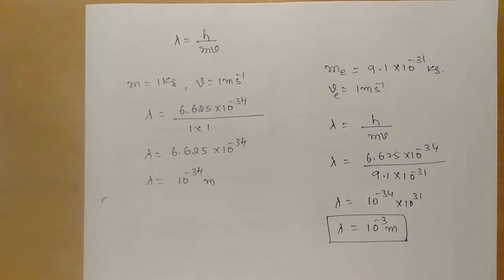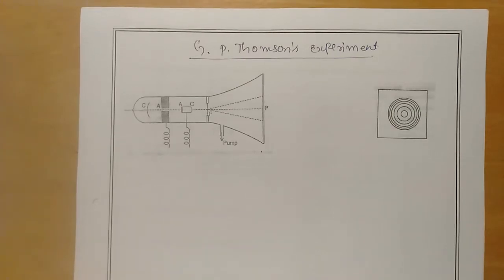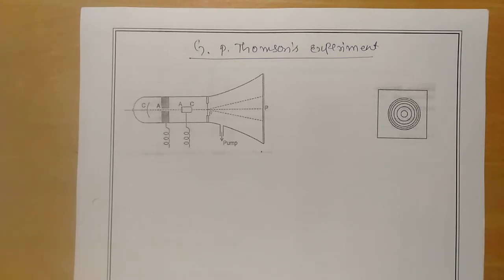Let us continue this session with the important G.P. Thompson experiment. The experimental proof for the wave nature or de Broglie hypothesis was first explained by G.P. Thompson, hence the name G.P. Thompson experiment. The principle is: whenever any material particle is in motion, it will be associated with matter waves — this is the de Broglie hypothesis.